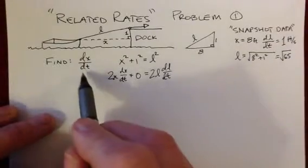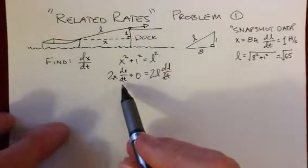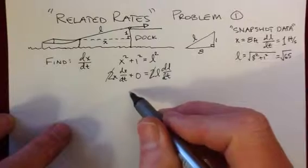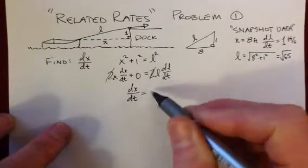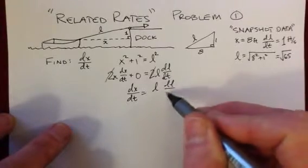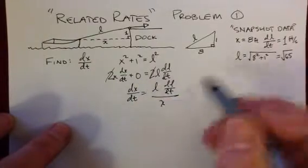Well, what am I looking for? I'm looking for the rate of change of the boat's position in the x dimension. So I'm looking for this. Well, I can cancel the 2s. And I can say that dx dt is simply going to be L times dl dt, sorry to squeeze that in there, all divided by x to get that over to the other side.